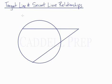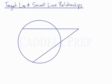In this lesson we're going to look at tangent line and secant line relationships. In this circle we have two secants drawn. They're both intersecting at this external point over here. Let's name some of these segments, because as we see, this line when it passes through the circle makes two segments.